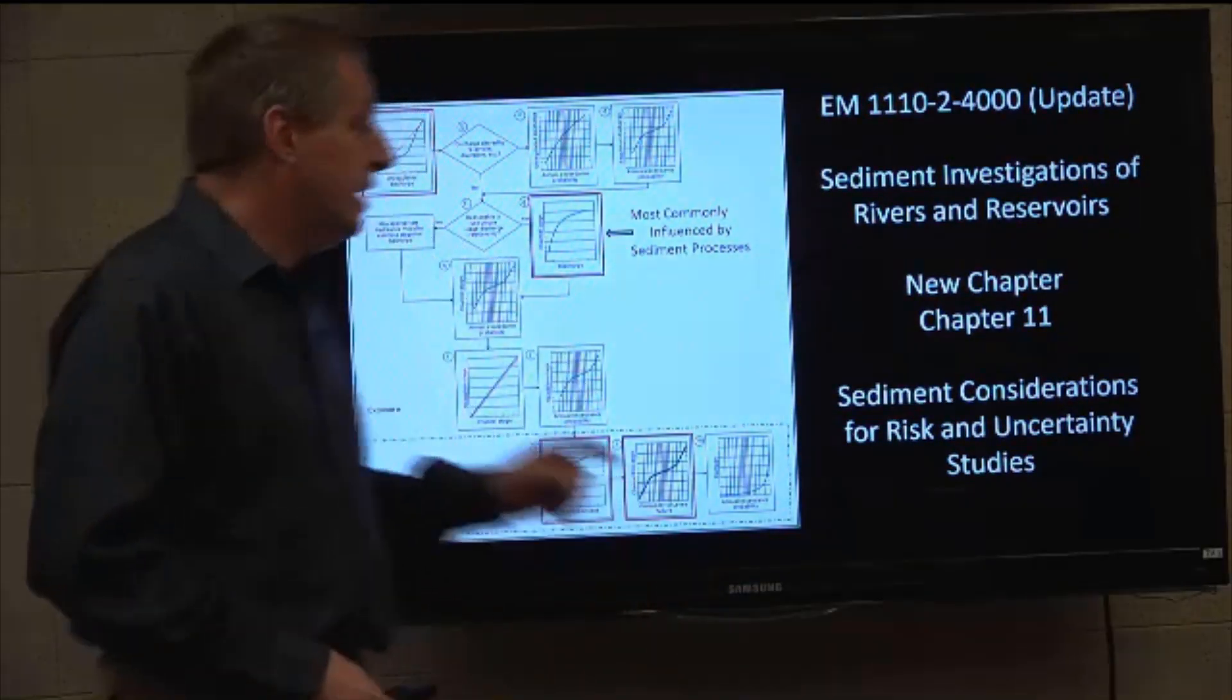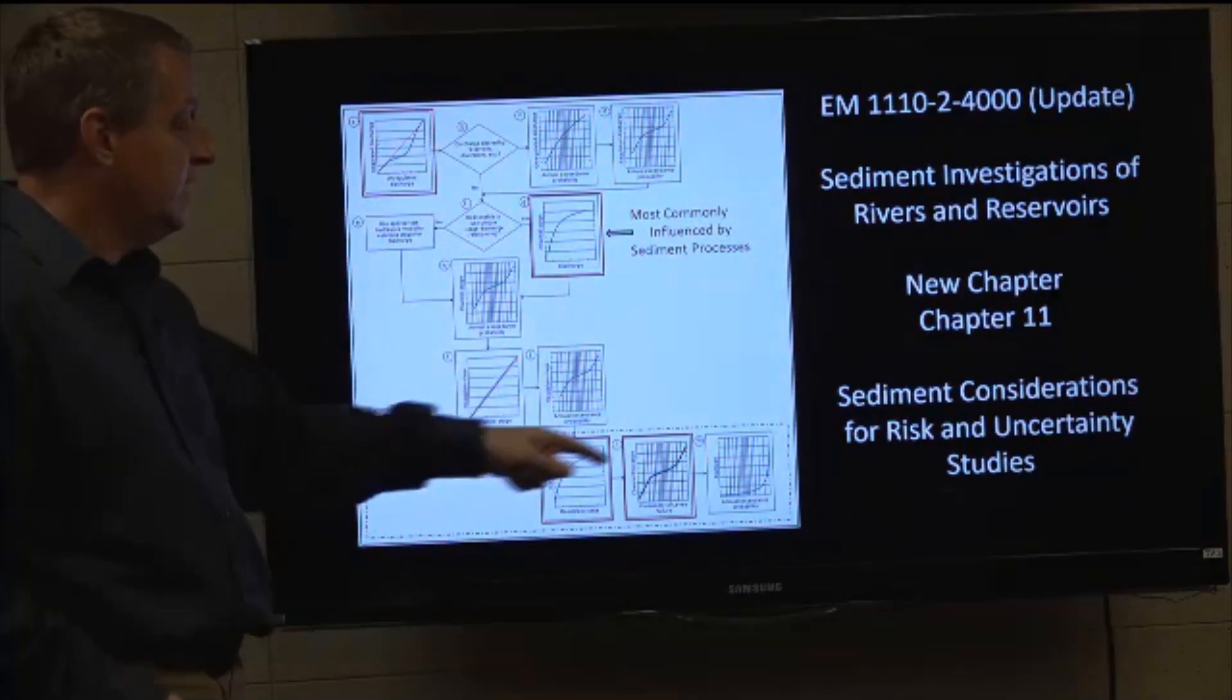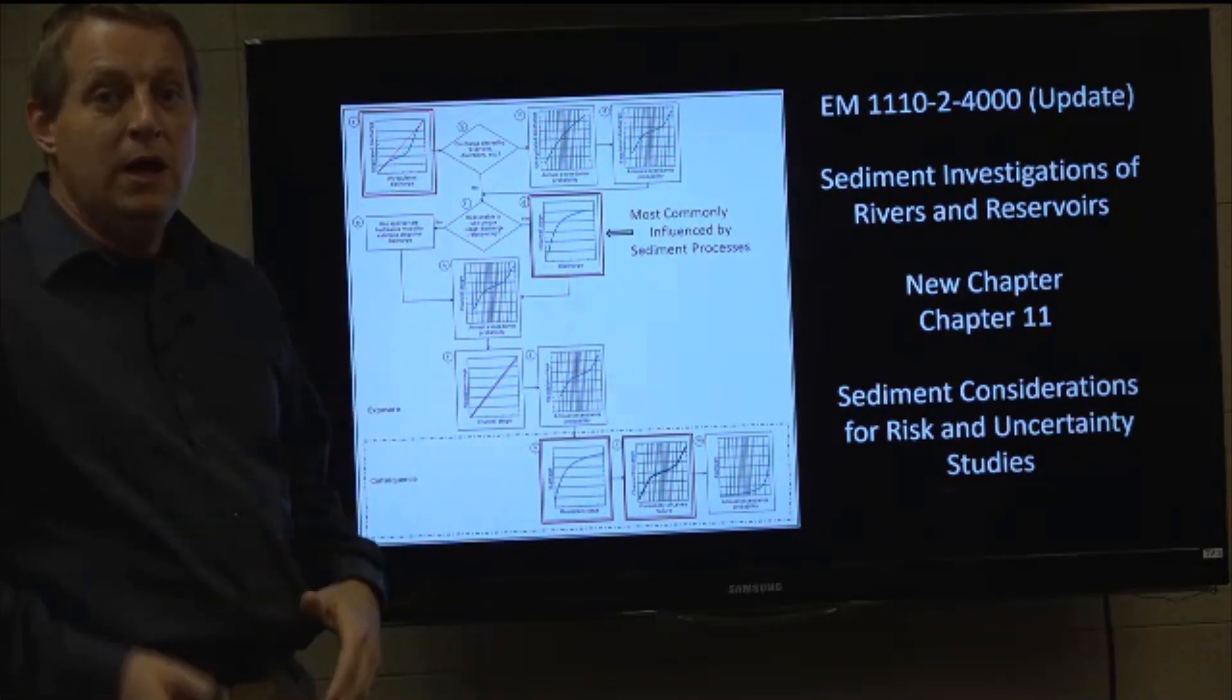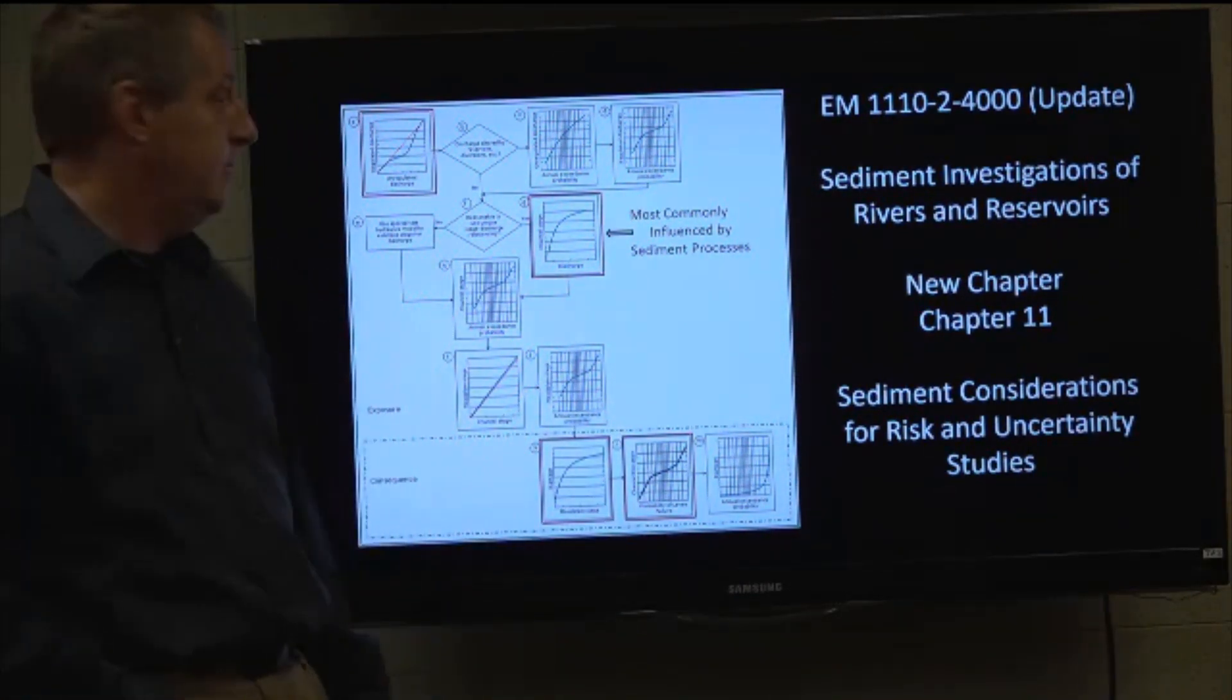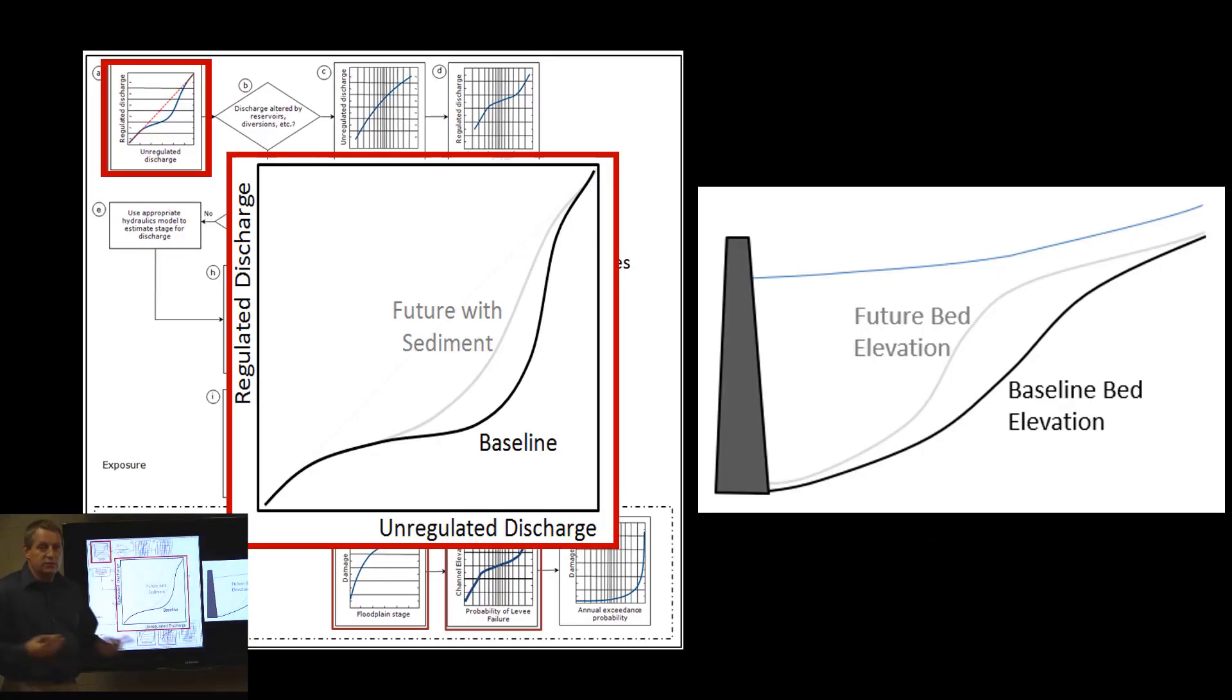But one of the things we did is we identified the four curves in the FDA workflow that could be significantly affected by sediment. Now, the first one is kind of obvious, and that's reservoirs. Reservoirs turn a river into a lake, and therefore they tend to induce deposition. And as you deposit sediment, you reduce the flood risk benefits of the reservoir. And so the relationship between your unregulated discharge and your regulated discharge curve will change over time.